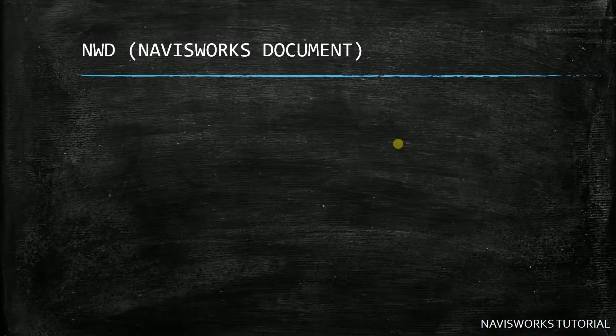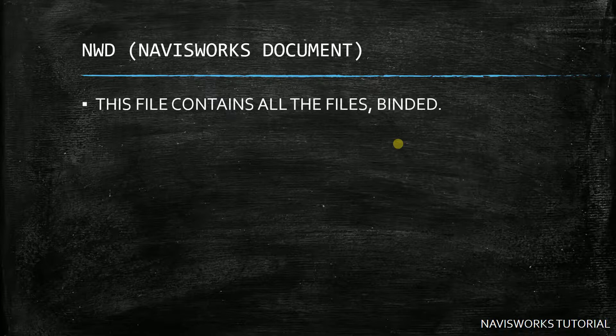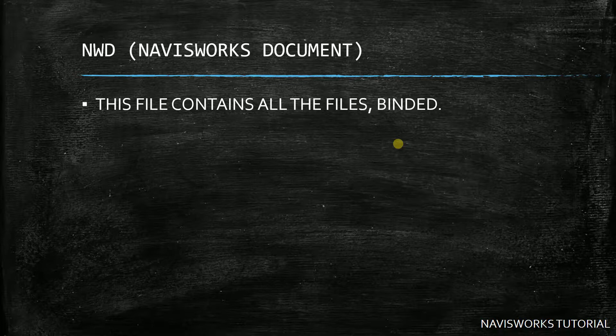The last file type is NWD — the Navisworks Document. This file contains all the linked files bound together, so all data is inside this single file. This is the file you want to send to your client or team members to examine, since everything is self-contained.